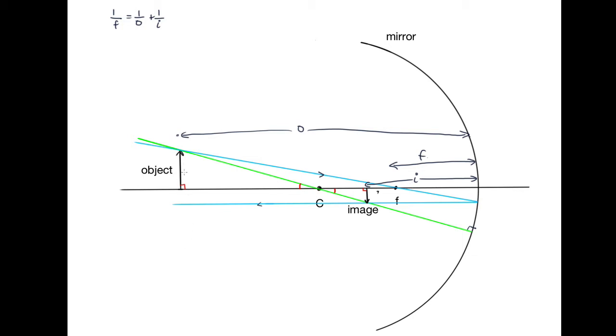Let's call the height of the object H O, and the height of the image H I. And now the distance from here to here, let's call this distance O minus C. If we let C be the distance to the center of curvature,